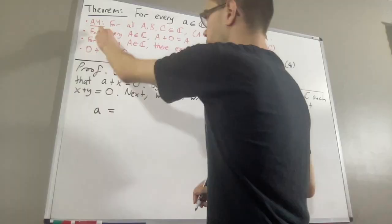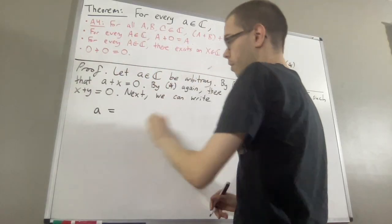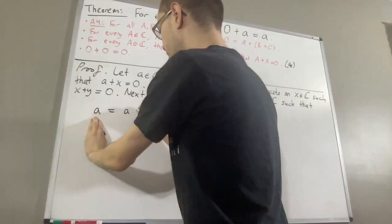First of all, we know for every complex number a, a plus 0 is equal to a. So we can write a as a plus 0.